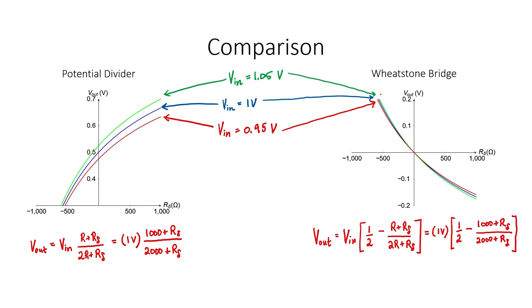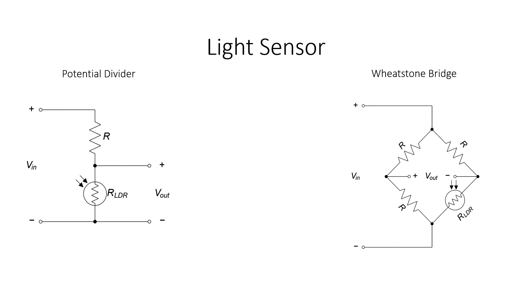The Wheatstone Bridge gives us a more precise measurement than the potential divider because we don't have the 0.5-volt DC offset. In a moment, we're going to go over to the bench and put together both a potential divider and a Wheatstone Bridge which can measure changes in ambient lighting. We'll be using a light-dependent resistor, whose resistance changes depending upon the amount of light falling on it — but we're going to be measuring the voltage rather than the resistance. Our light-dependent resistor has a nominal resistance of about 120 kiloohms, so we'll be using 120-kiloohm resistors to fill out the circuits.